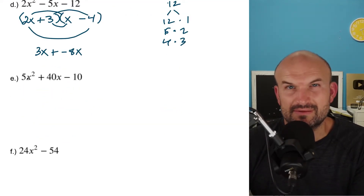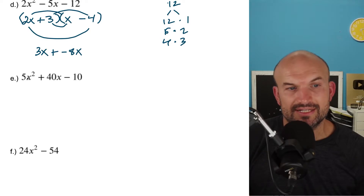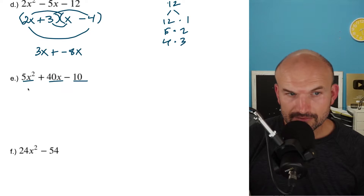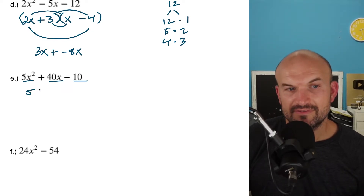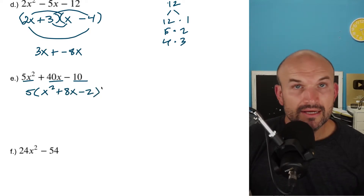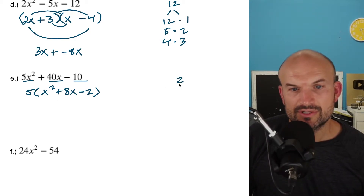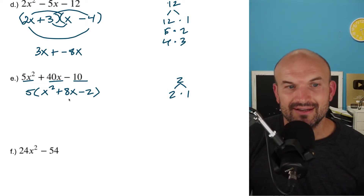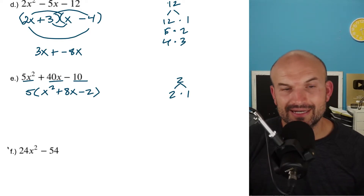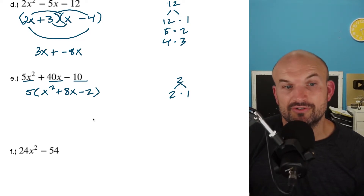In this example, you can see we have some larger numbers, but you always want to look to see if there's something you can easily factor out first. You should hopefully recognize that all these terms — the five x squared, the 40x, and the negative 10 — are all divisible by five. So I can take out a five. When I divide out a five, I'm going to be left with x squared plus eight x minus two. Unfortunately, this is not going to be factorable any further, so this is just going to be our factored form.